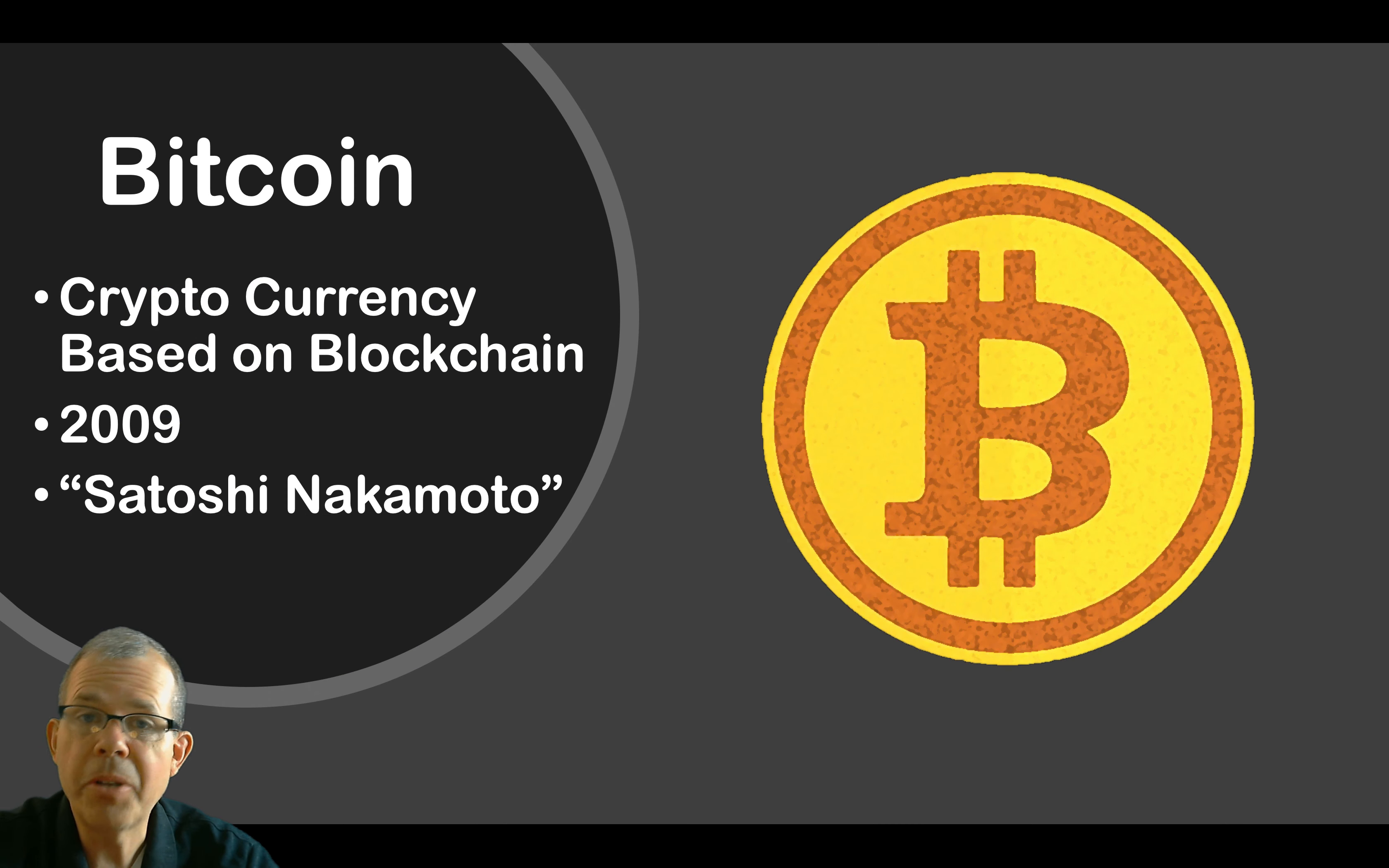Probably the best known example of how blockchain is used is with Bitcoin. So Bitcoin is a cyber currency. It's not actually a currency that you can print. It's digital money. And it was developed in 2009 by this mysterious person, Satoshi Nakamoto.